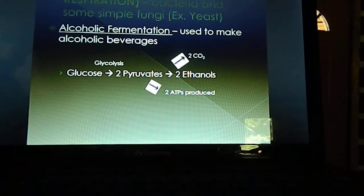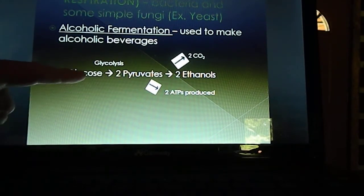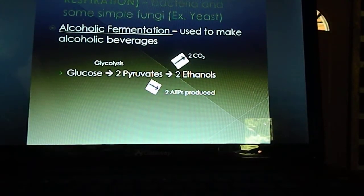Bacteria and some fungi, like yeast, don't undergo cellular respiration. They undergo an anaerobic respiration we call fermentation. There are two types of fermentation. There's one called alcoholic fermentation, where alcoholic beverages are made using this process. If you look at the first part of the reaction for alcoholic fermentation, you can see glucose is broken down into two smaller molecules in glycolysis.